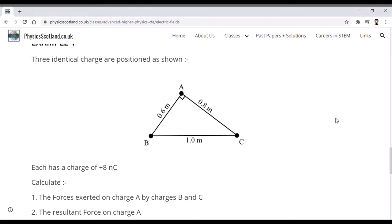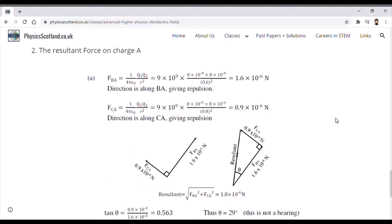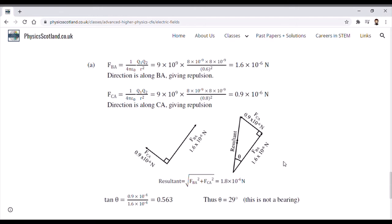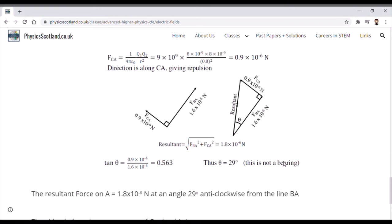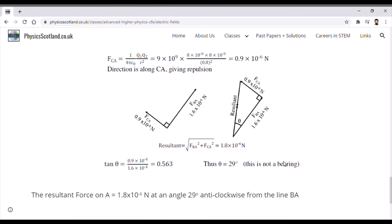What we do is refer to this new direction—this resultant vector—based upon our directions that are already on there. We've got two of them that we can work with: the line AB or the line AC. They give us a starting point we can work from. In the case of the diagram we've done for our vector, we have worked off the line AB. So we write the resultant force on A is equal to 1.8 times 10 to the minus 6 newtons at an angle of 29 degrees anti-clockwise from the line BA.